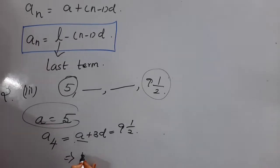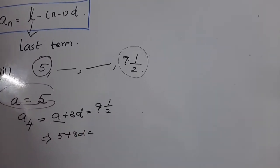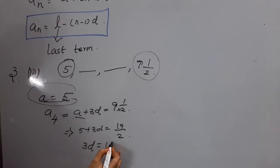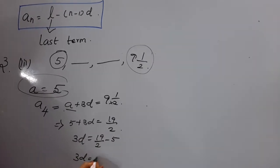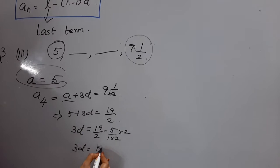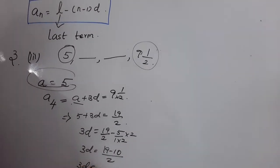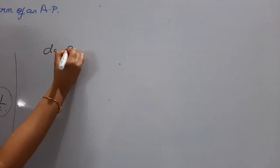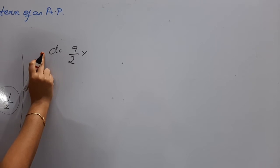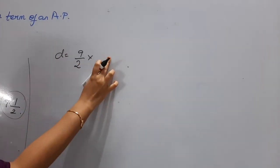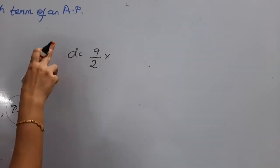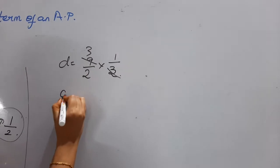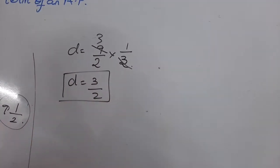Substituting the value of A: 5 + 3D = 19/2 (converting 9½ to an improper fraction). We need to find D. Transposing 5: 3D = 19/2 − 5. Taking LCM: 3D = (19 − 10)/2 = 9/2. Therefore D = (9/2) ÷ 3 = 3/2. We found D = 3/2.